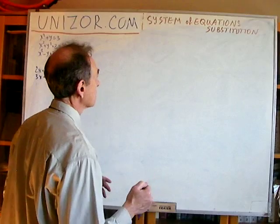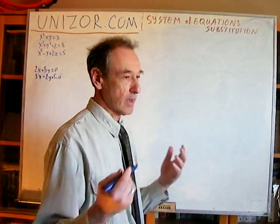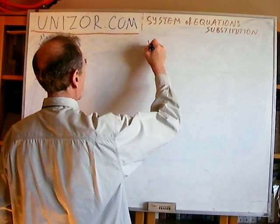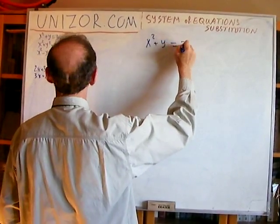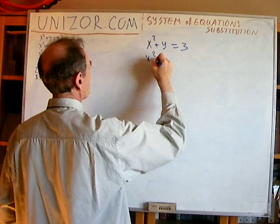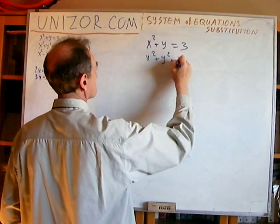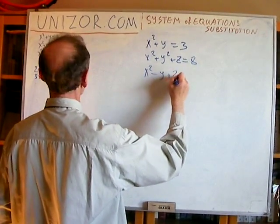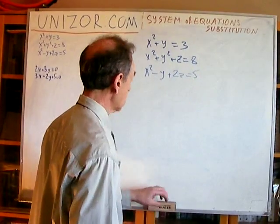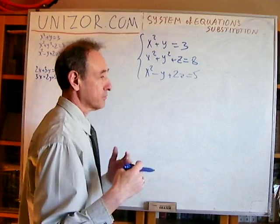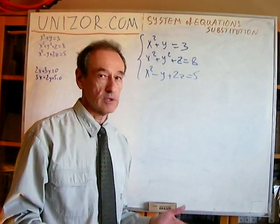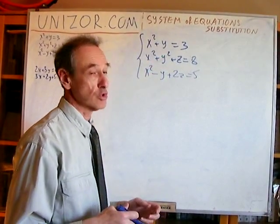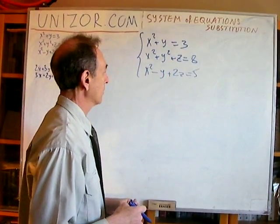So, what is the example I would like to base my explanation of this method of substitution? It's this one: x squared plus y is equal to 3; x squared plus y squared plus z equals 8; x squared minus y plus z equals 5. This is a system of three equations with three unknowns — x, y, and z. Basically it's a polynomial of degree 2, because we have x squared, y squared, etc.